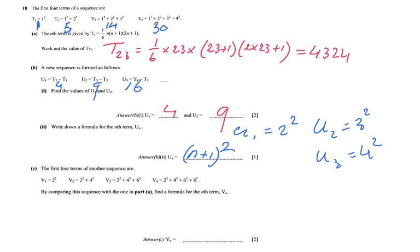Let's work out the actual values. V1 = 4. V2 = 4 + 16 = 20. V3 = 20 + 36 = 56. V4 = 56 + 64 = 120. Now let's compare: from part A, T1=1, T2=5, T3=14, T4=30. I notice that 1×4=4, 5×4=20, 14×4=56, 30×4=120. So each term in sequence V is exactly 4 times as large as the corresponding term in sequence T.